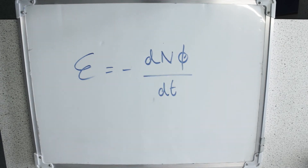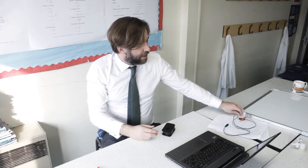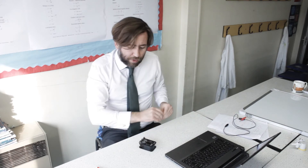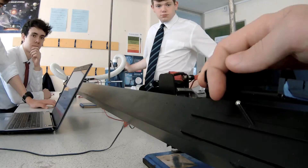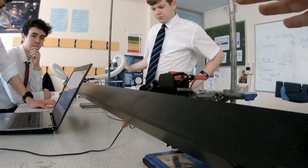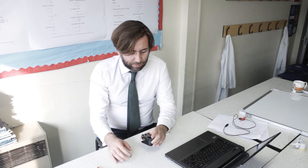I was looking for an interesting context to demonstrate this to my students. It turns out that trains actually have electromagnetic speed sensors. They work by having a coil of wire on the track and a magnet on the train. As the coil of wire moves past the magnet — or as the magnet moves past the coil of wire — an EMF is induced.